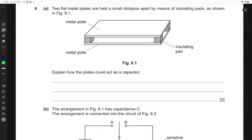Two flat metal plates are held a small distance apart by means of insulating pads as shown in this figure. So here we see two metal plates and they're separated by some insulation pads.